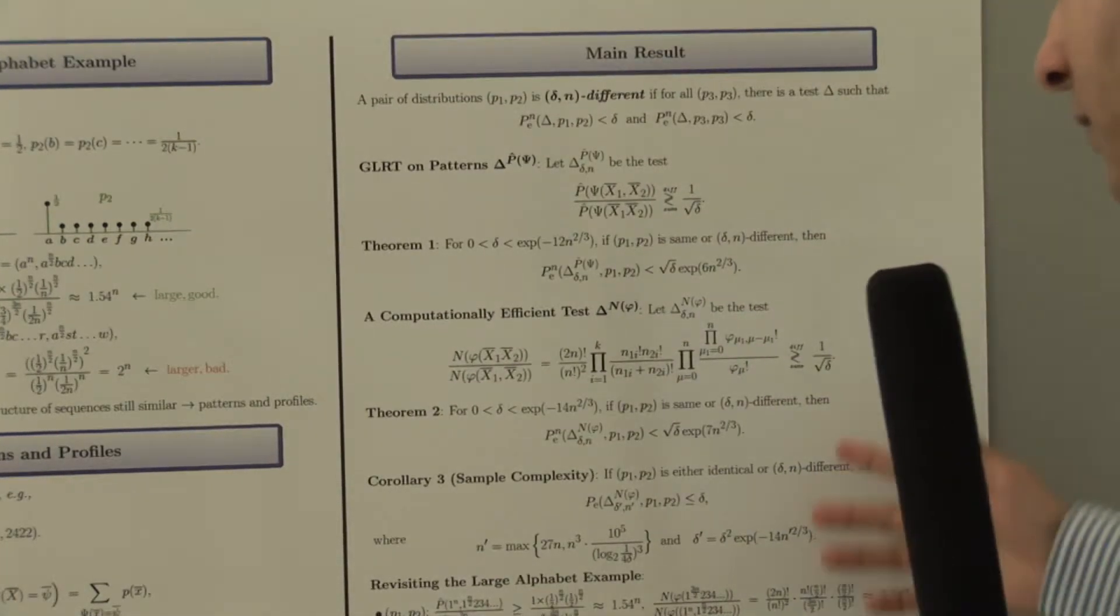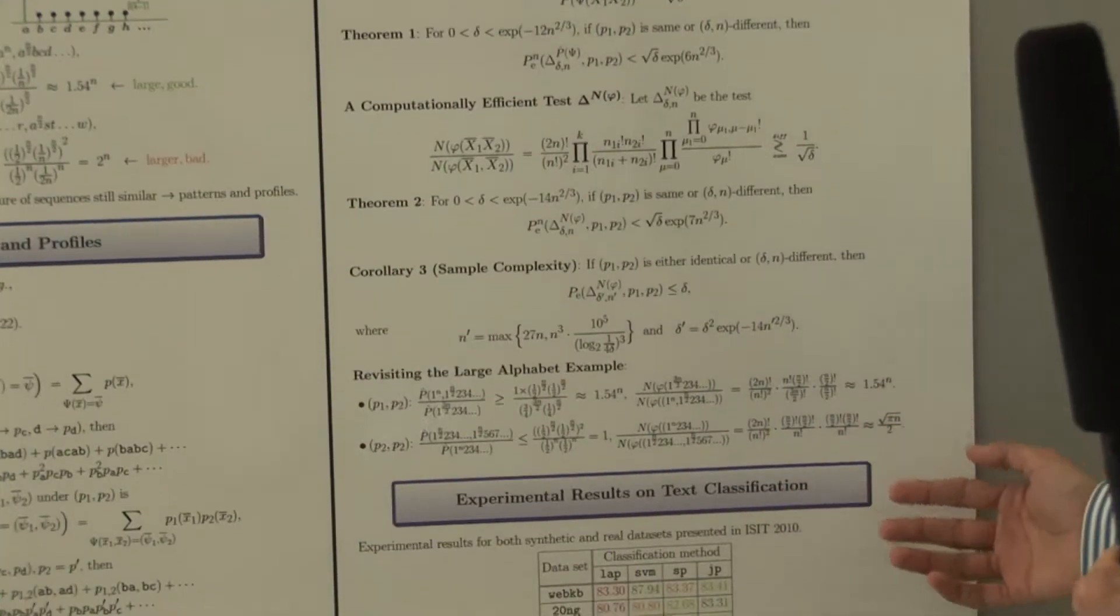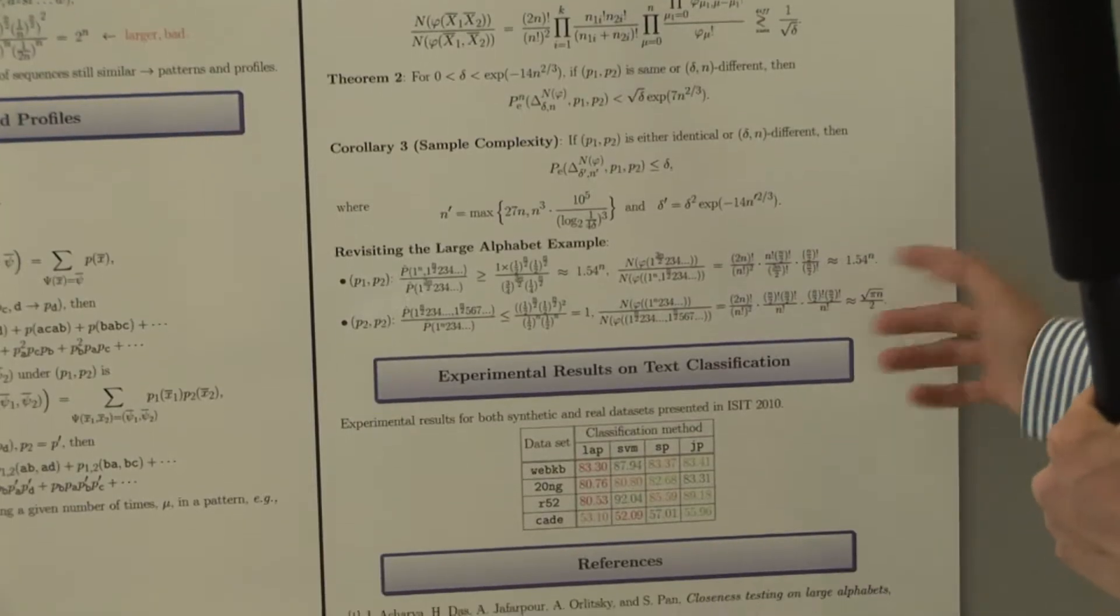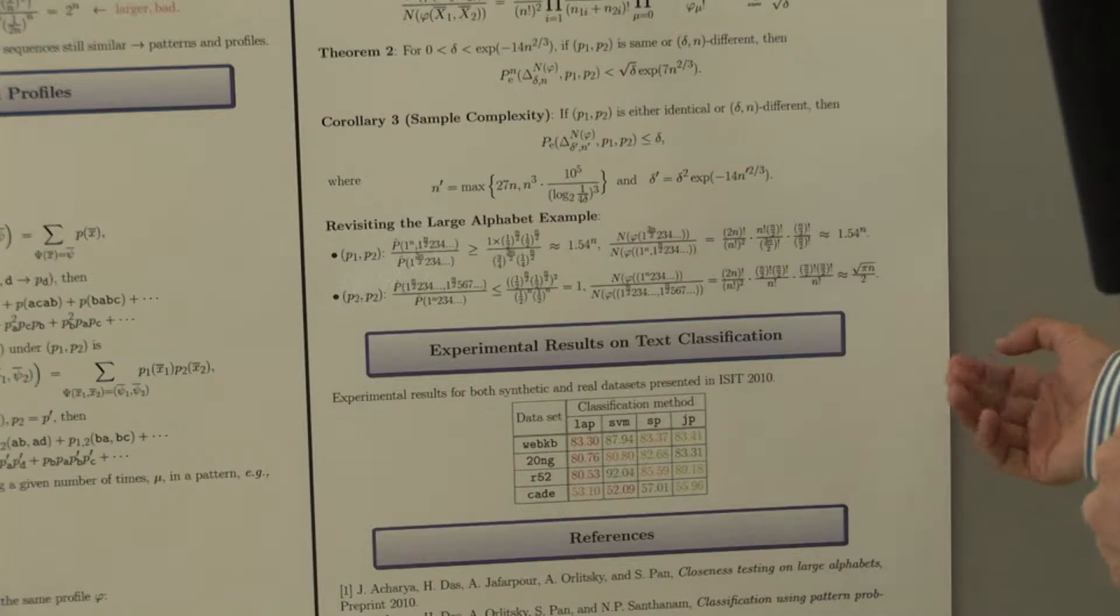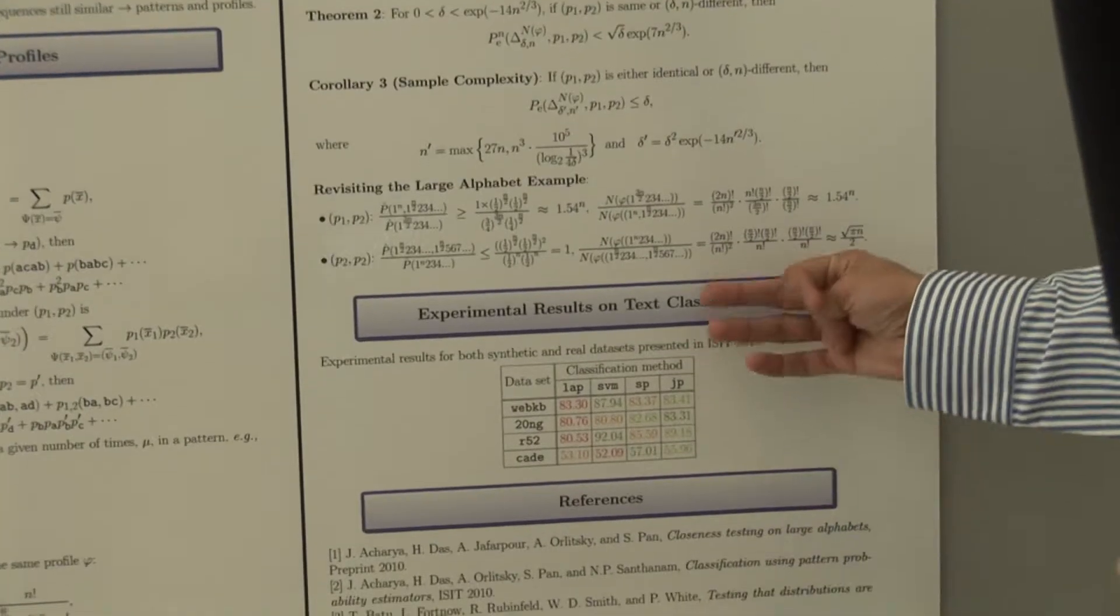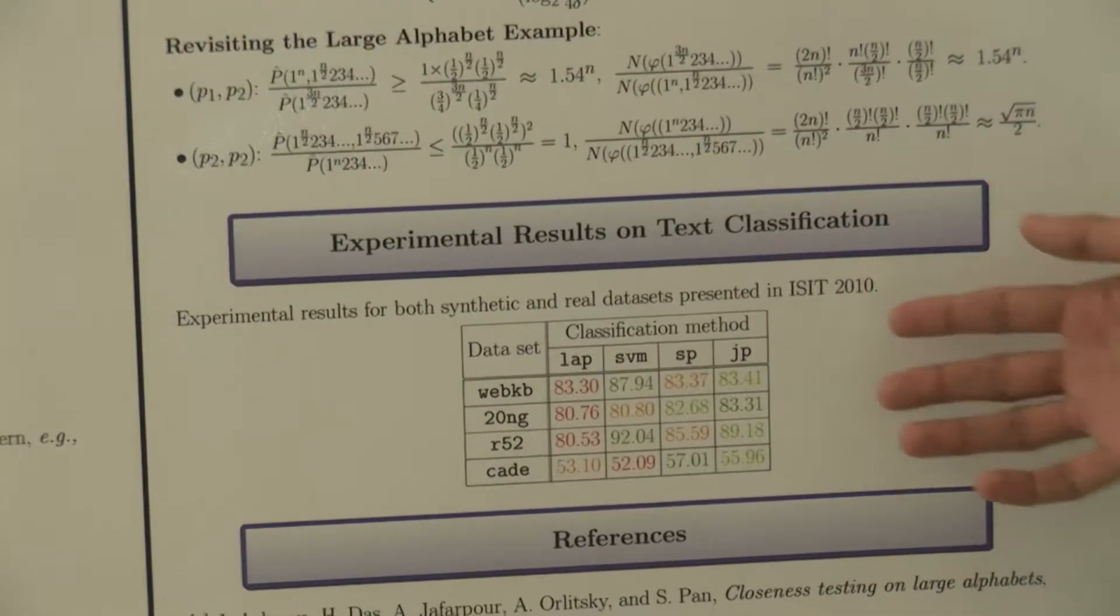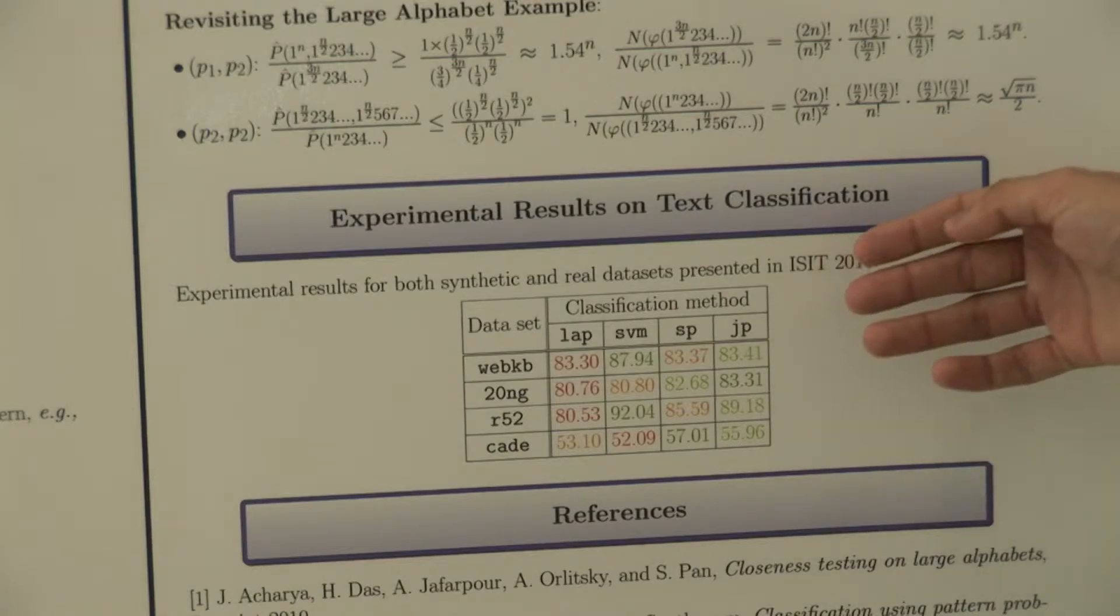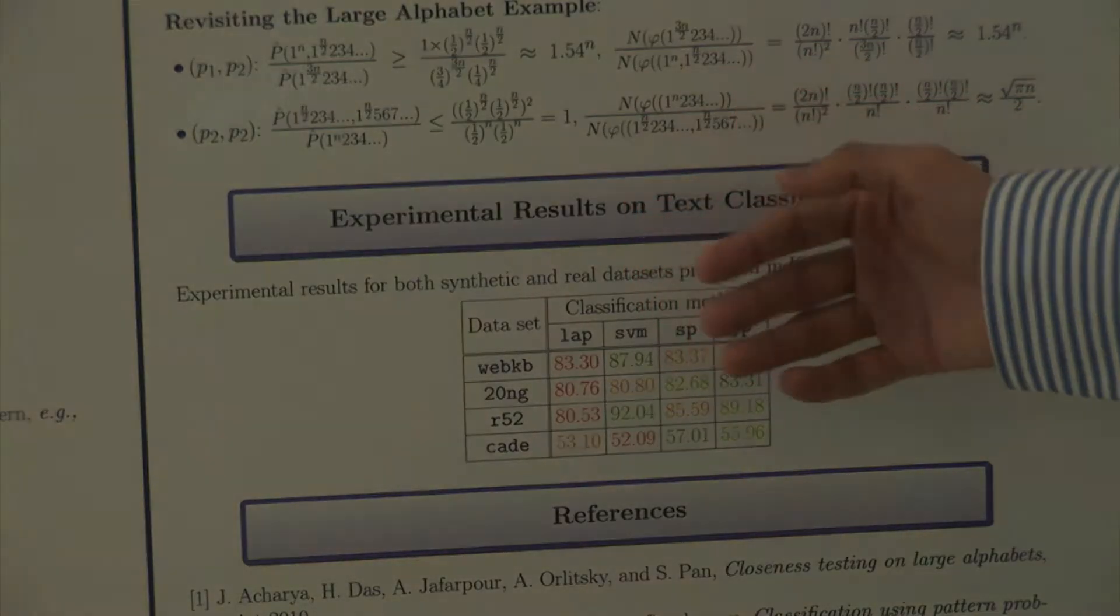We also have some experimental results for the application of text classification. Here what we do is we try to classify newspaper articles into various categories like sports, politics, religion, and so on. These are the accuracies, green is for higher accuracy and red is for lower accuracies. We can see that our method which is joint pattern, it actually performs very well compared to state-of-the-art methods like support vector machines.